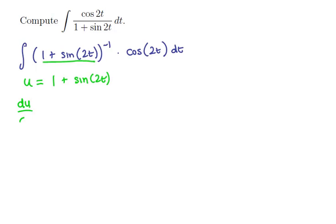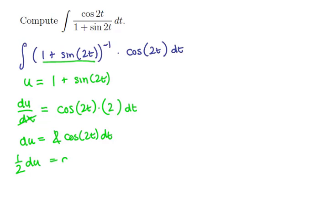So derivative du dx, or dt I guess sorry, should be the derivative of sine of blank is cosine blank times the derivative of blank. The blank is 2t, the derivative is 2, so we can multiply both sides by dt, and we could get the differential of u is 2 cosine of 2t dt. Let's divide that constant out too. So we're going to have 1 half du is equal to cosine of 2t dt, and this is the differential we need to fit.